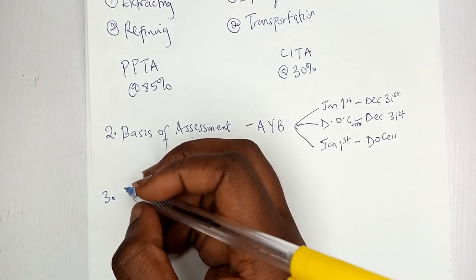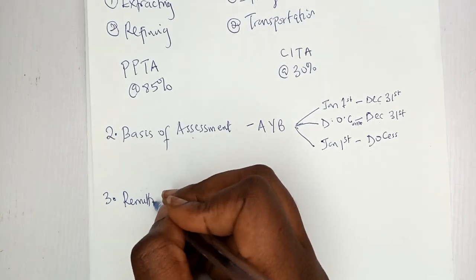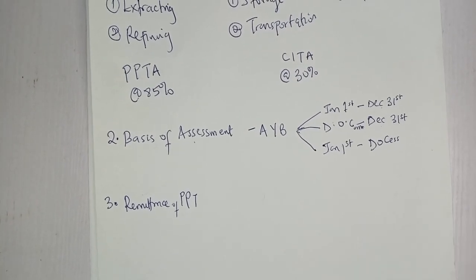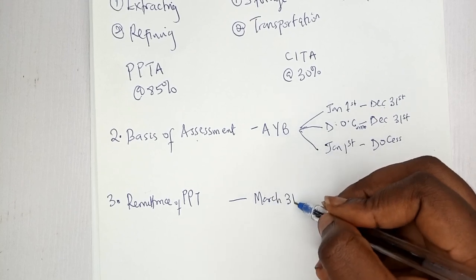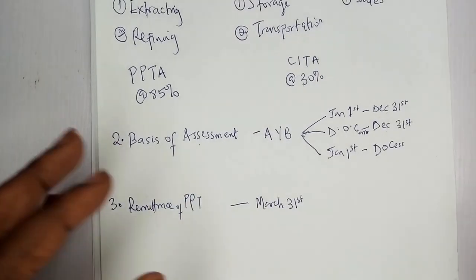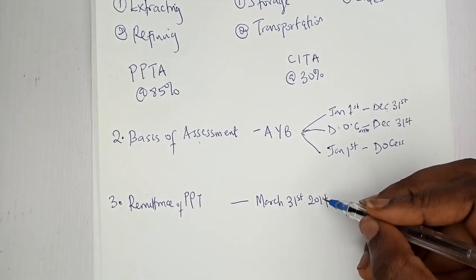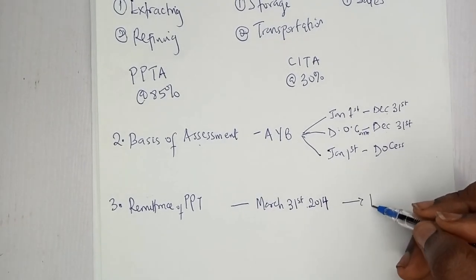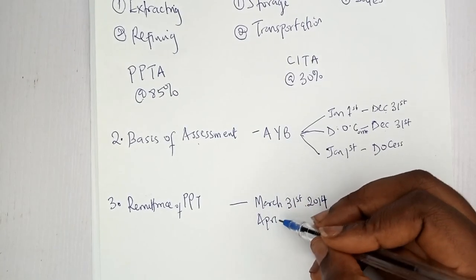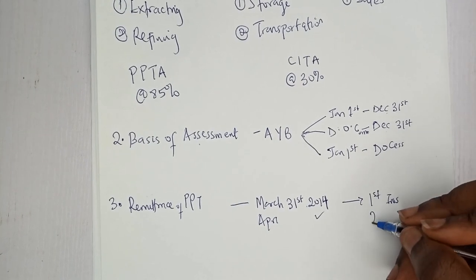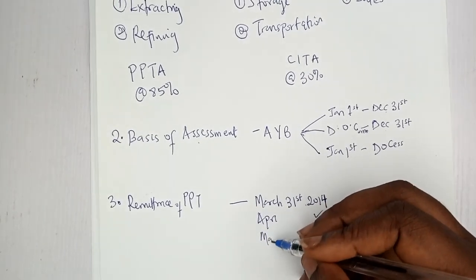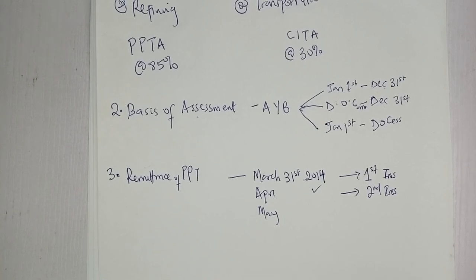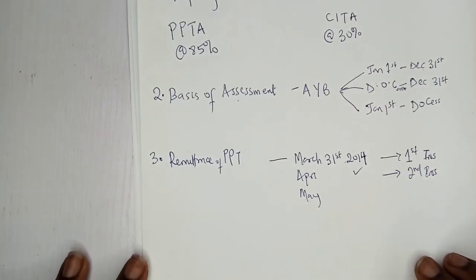Moving to payment and remittance of Petroleum Profit Tax — PPT is paid in installments, beginning from March 31st of that accounting year. For example, if the accounting year is 2014, the first installment is paid March 31st 2014, the second on April 30th, then May, and so on up until February of the next accounting year — that is the 12th installment. This installment structure prevents petroleum companies from withholding taxes owed to the government.